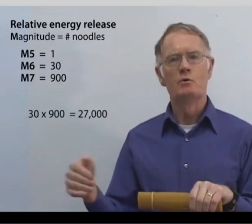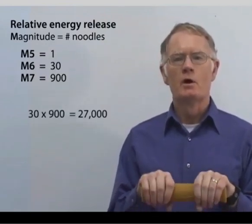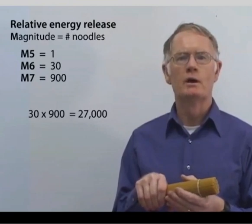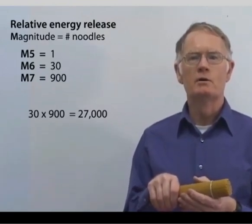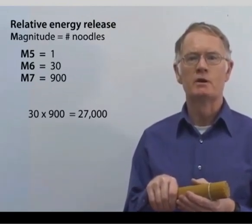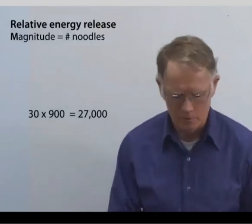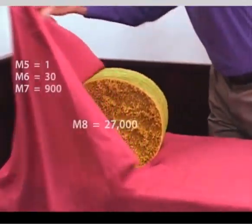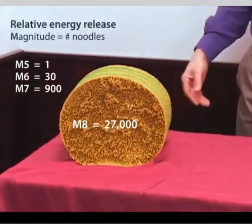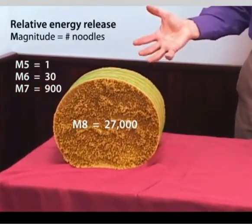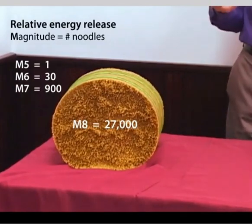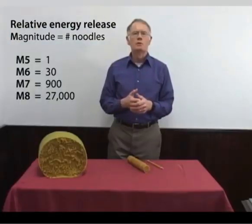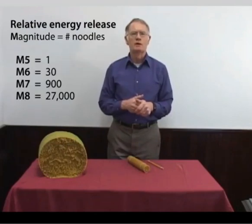If I want to go the next step to a magnitude 8 earthquake, I'll have to take this bundle of 900 multiplied by another 30 to get a bundle of 27,000 strands of spaghetti to represent a magnitude 8 earthquake. And here we have it, a bundle of 27,000 strands of spaghetti. I can barely lift it, let alone imagining maneuvering it in my hands and trying to bend it to break through that bundle of 27,000 strands of spaghetti.